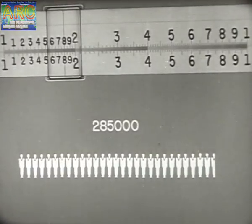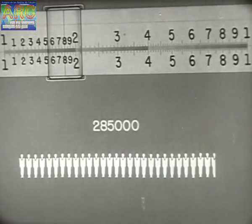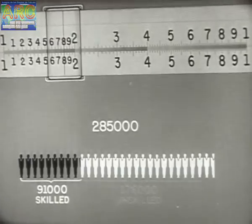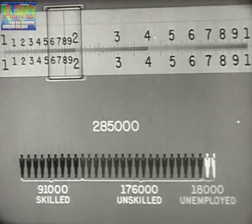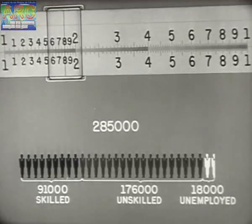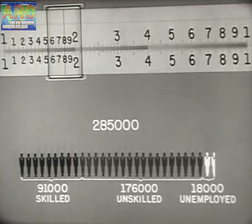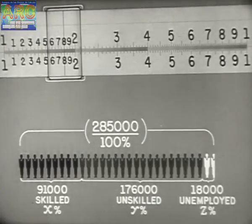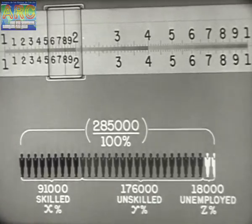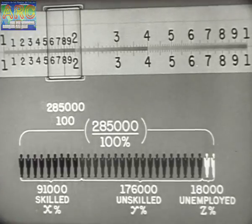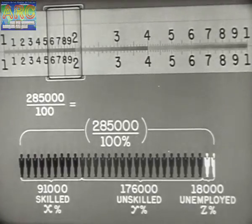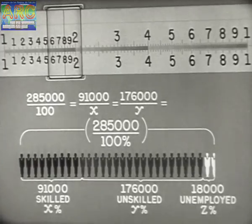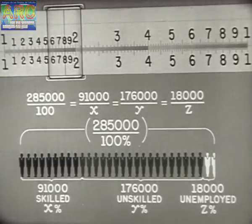Problems in percentage may also be worked by proportion. Of 285,000 men, 91,000 are skilled workmen, 176,000 unskilled, and 18,000 unemployed. What is the percentage in each group? Since 285,000 is 100%, find the percentages X, Y, and Z. Stating the problem in terms of proportion: 285,000 is to 100, as 91,000 is to X, as 176,000 is to Y, as 18,000 is to Z.